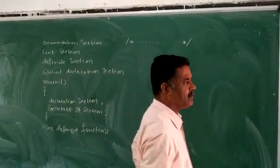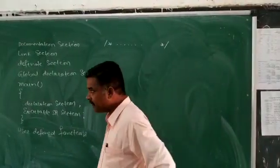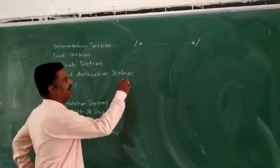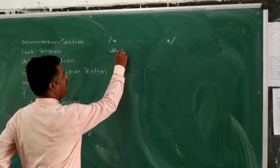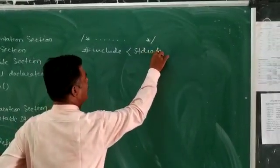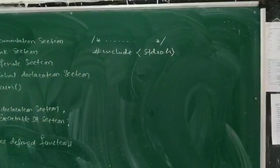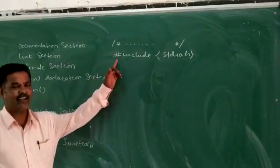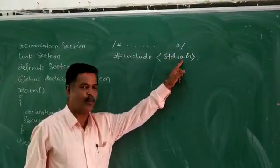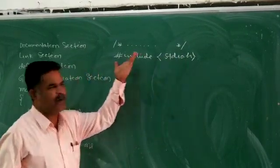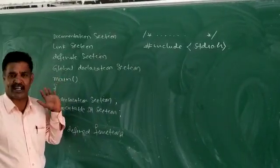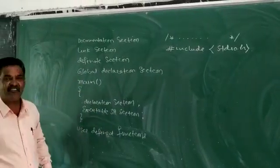The link section is nothing but linking the file before going to the main function. Here the preprocessor directive — the #include statement — is used, such as #include <stdio.h>. It may also be written as #include <math.h>, #include <string.h>, and so on, one by one.